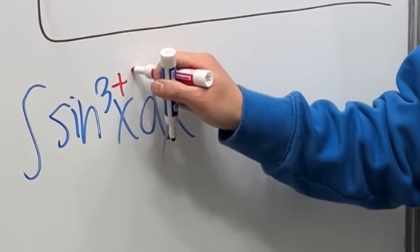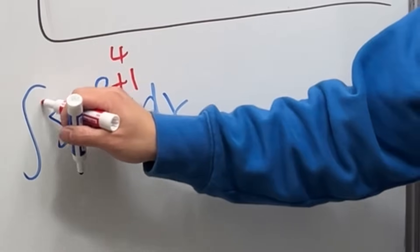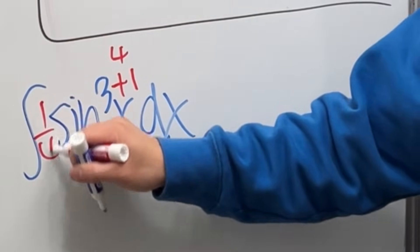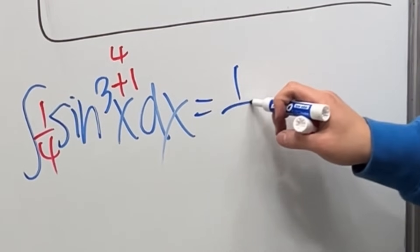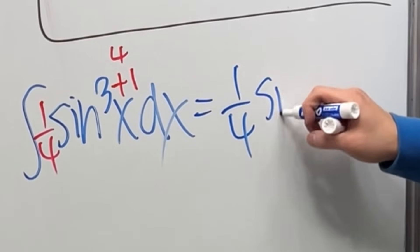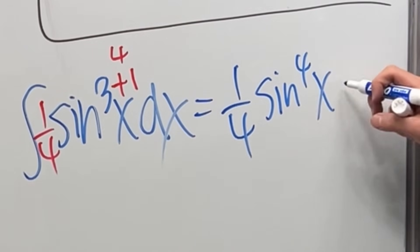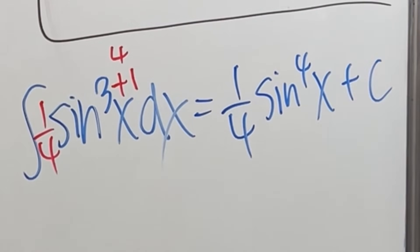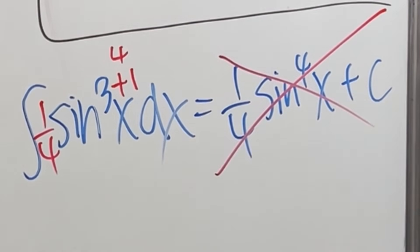Add one to the power and we get four, then divide by the new power, giving one over four sine to the fourth power x plus c. This right here is incorrect.